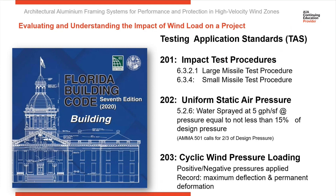TAS 203 describes cyclical testing where you perform cycles of positive, negative, positive, negative pressure while measuring deflection. Throughout all of these tests, the system still has to pass after it's been impact tested.